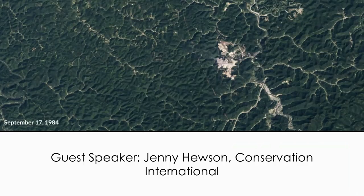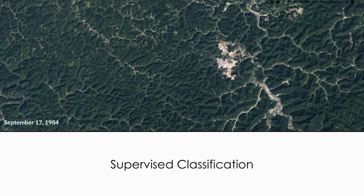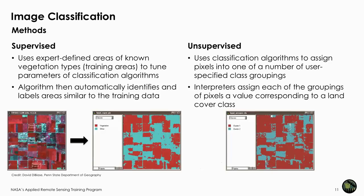Thank you, Cindy. I am Jenny Hewson from Conservation International. In image classification, it is important to consider that there are generally two methods: supervised and unsupervised. In supervised classification, the analyst is the expert and uses their knowledge to generate expert-defined representative areas of known vegetation classification or land cover types. These are termed training areas or training data, and are used to train the classification algorithm.